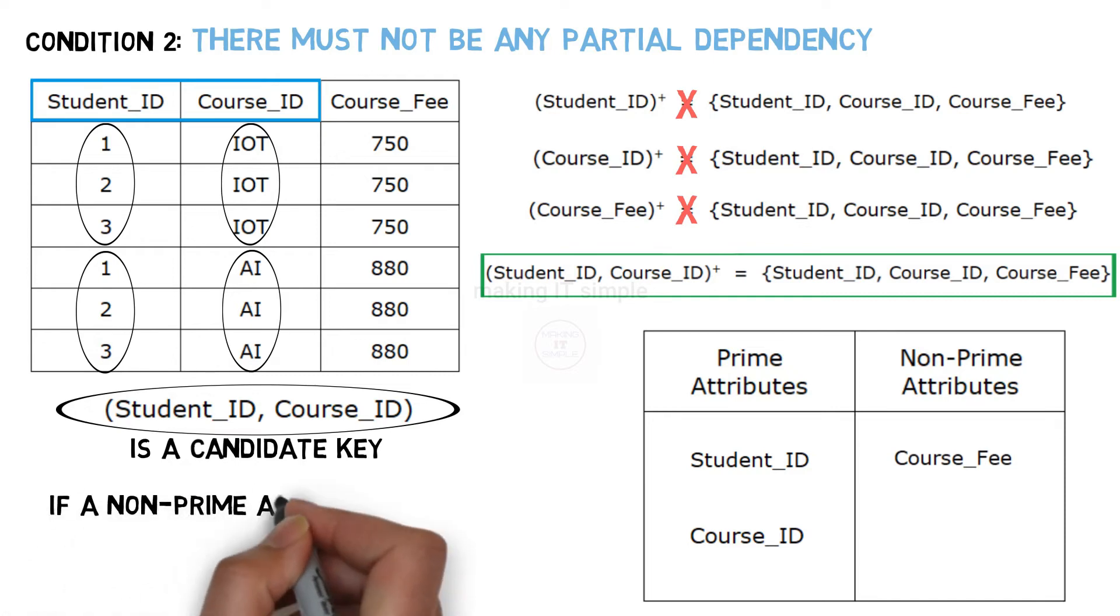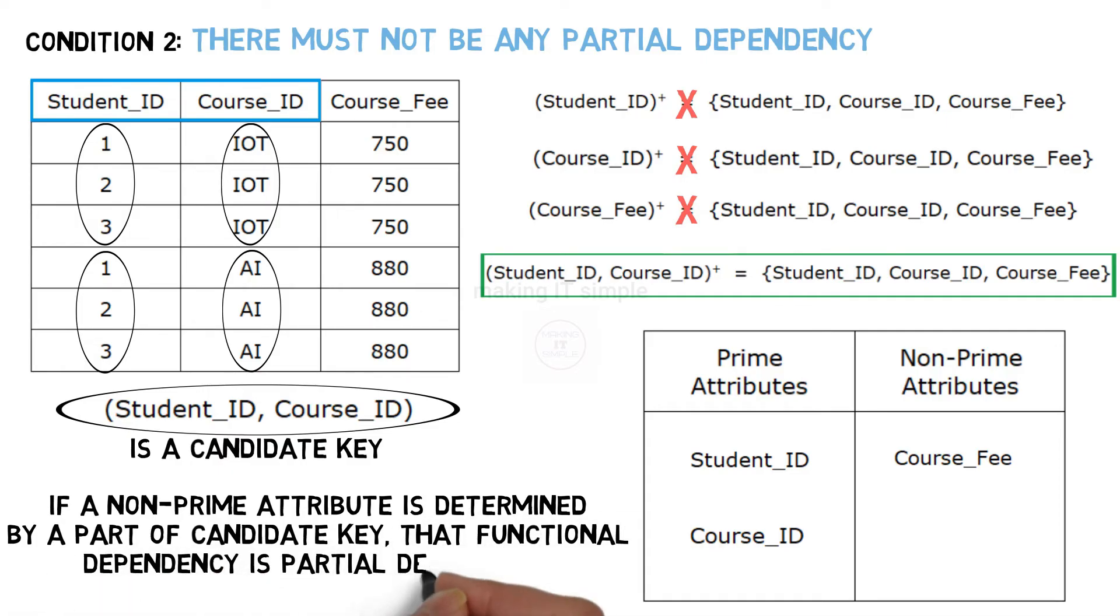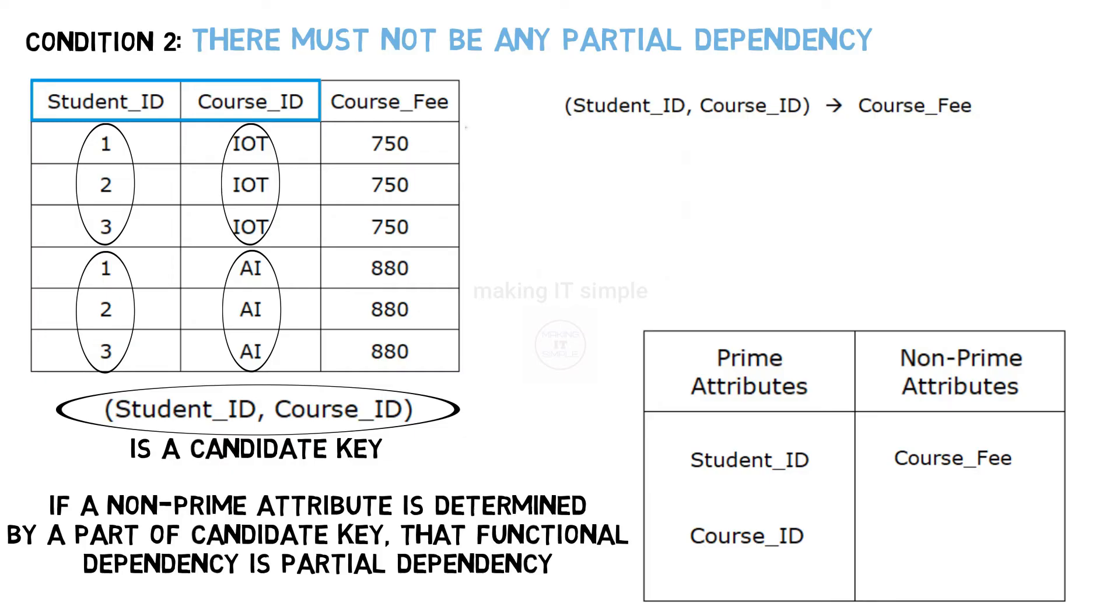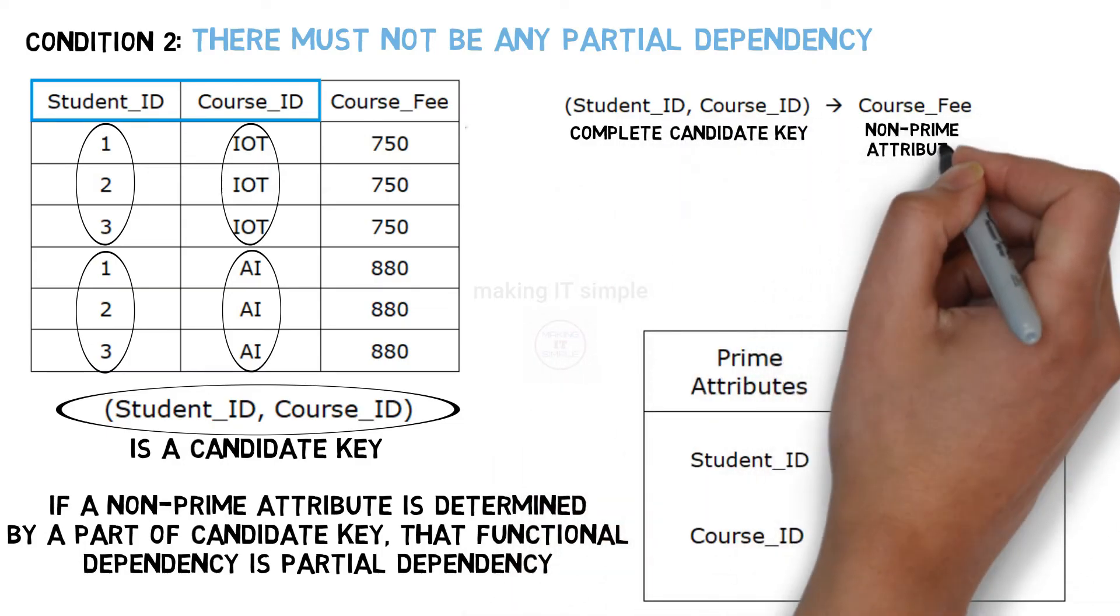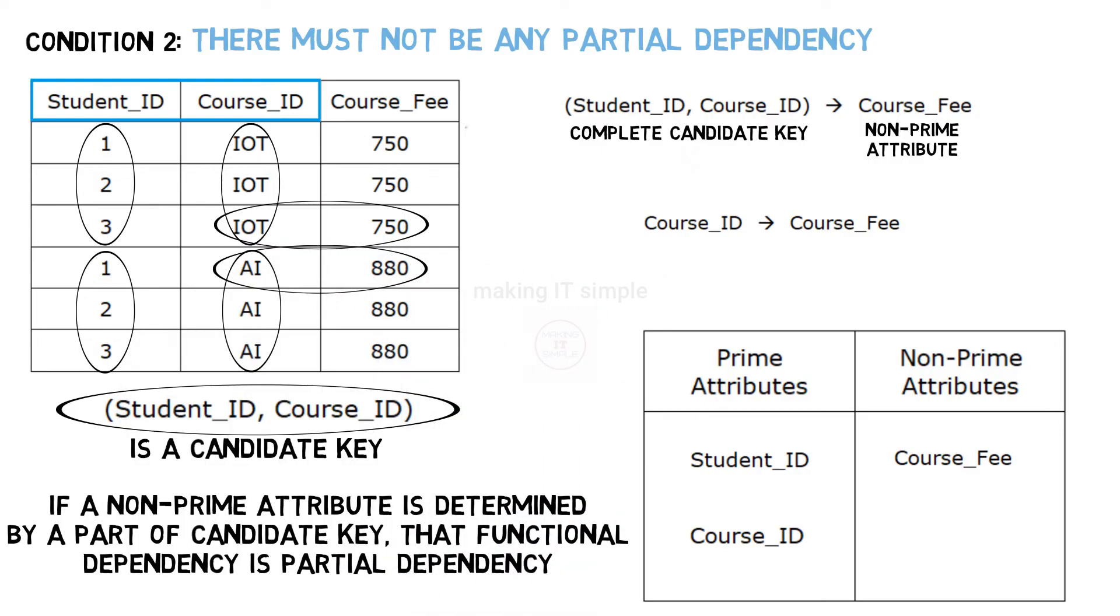So partial dependency definition states that if a non-prime attribute is determined by a part of candidate key, that functional dependency is partial dependency. Let us check. Student id and course id determines course fee is one of the functional dependencies. In this case complete candidate key determines non-prime attribute. Other than that, if you see by using course id we can uniquely identify course fee. So this can also be a functional dependency.